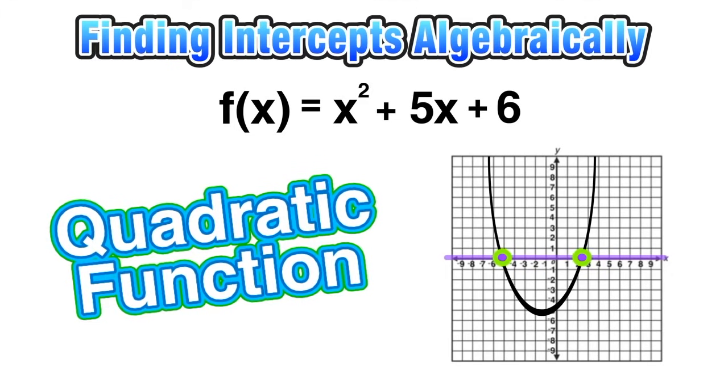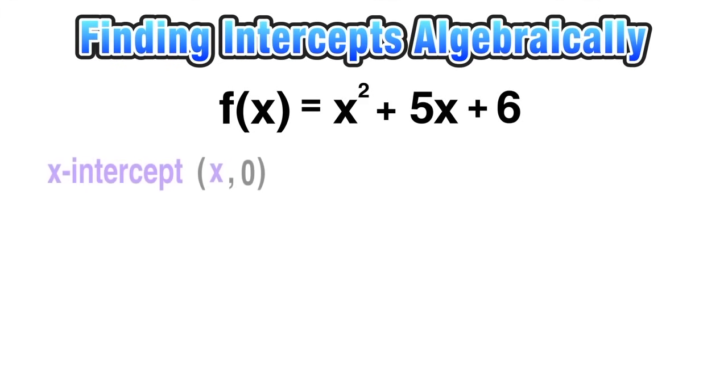Keeping this in mind, let's find the x and y-intercepts for this quadratic. Let's start off by finding those x-intercepts. To do that, first thing we do is rewrite the function in y equals form. So now we have y = x² + 5x + 6.